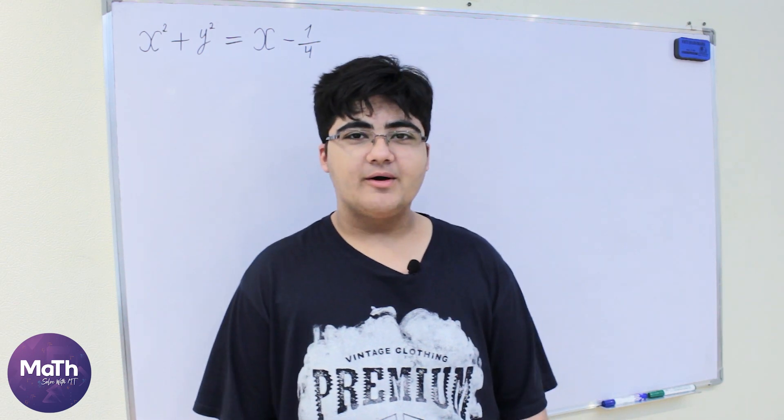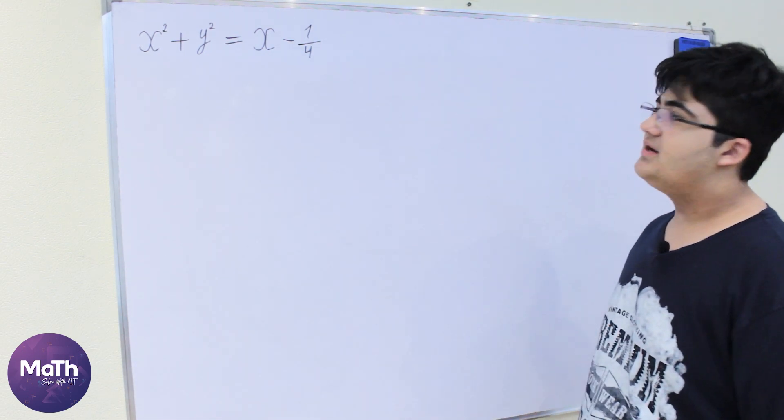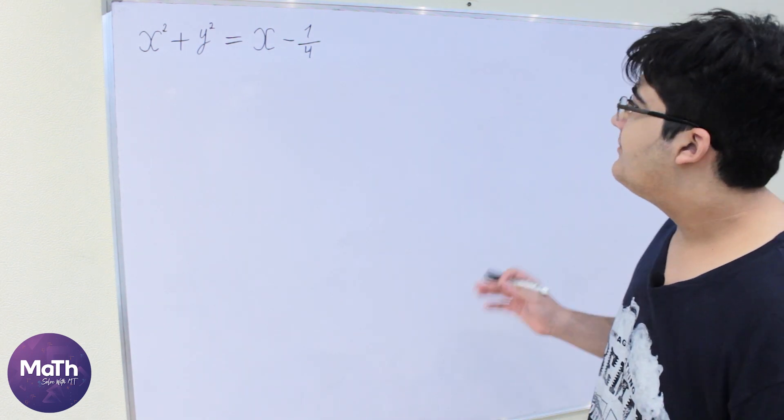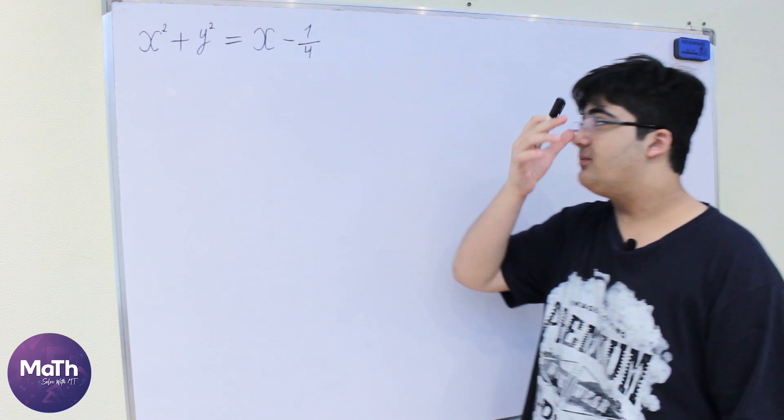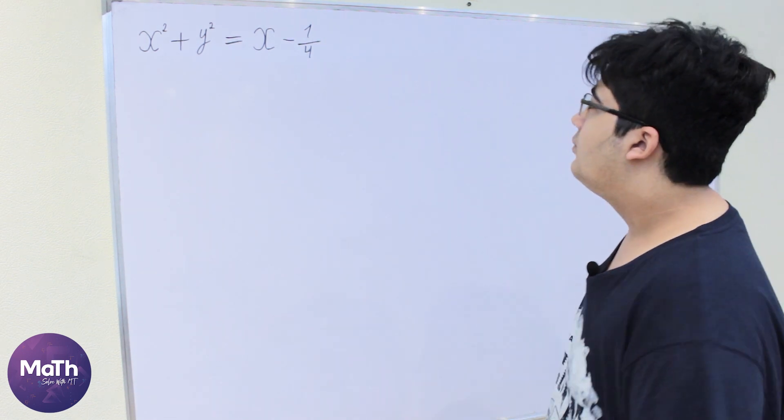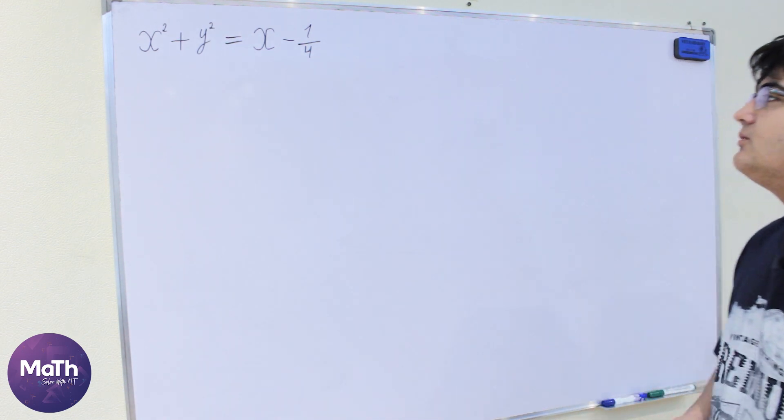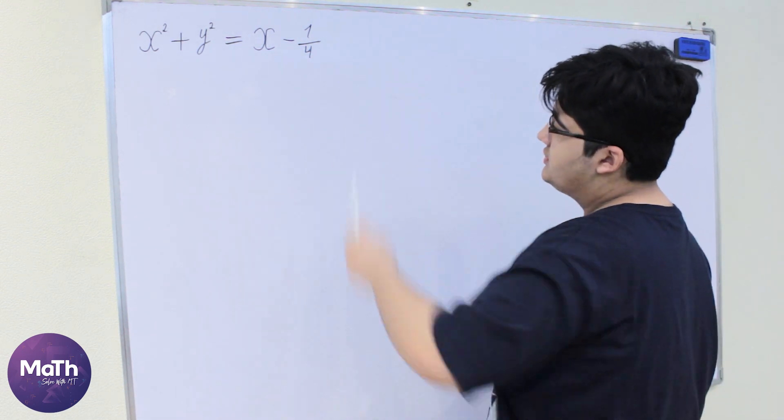Hi guys and welcome back to my channel. So today we have a nice polynomial equation. We have x squared plus y squared is equal to x minus 1/4. So we need to find the possible solutions.